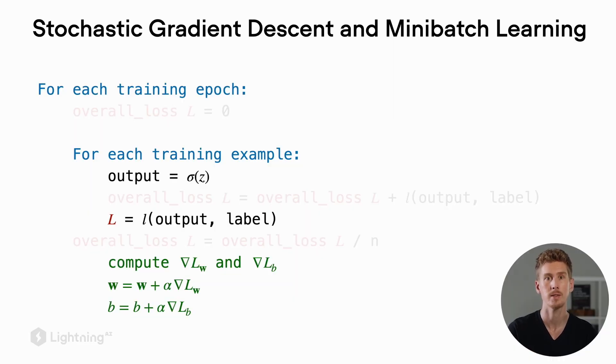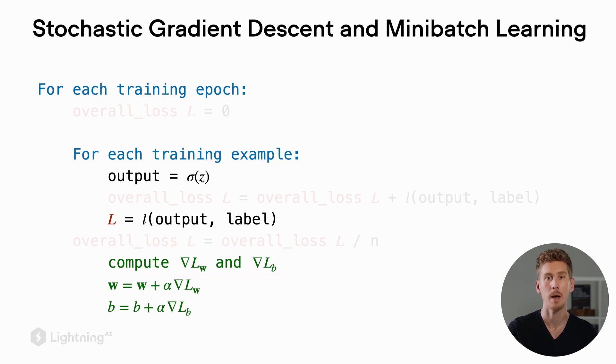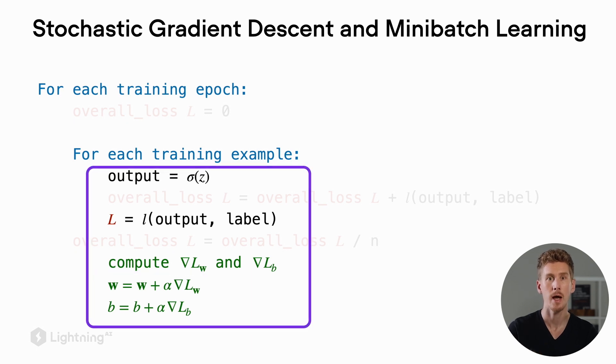In contrast, in stochastic gradient descent we compute the gradient of the loss for a single training example, and then using this loss we update the model parameters. In essence, we are updating the model after each training example, so the stochastic gradient descent algorithm is essentially an approximation of gradient descent.